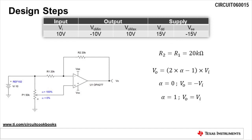To begin, set R2 equal to R1. We will choose a resistance of 20 kilo ohms to use for these resistors. Setting R2 equal to R1 simplifies the transfer function to 2 times alpha minus 1 times the input voltage VI.